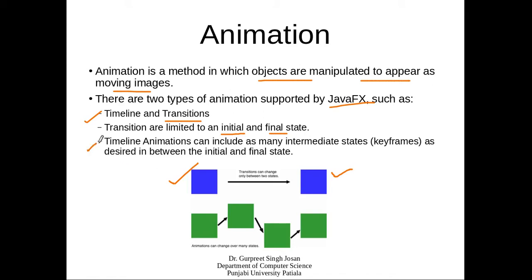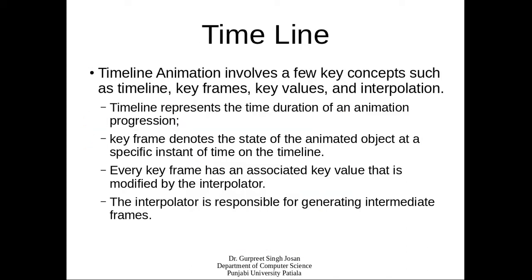Timeline animation includes as many intermediate states — also known as key frames — as desired between the initial and final states. We can add any number of key frames and change the state of objects at every key frame. The system generates a sequence of changes across the key frames to produce the animation. Timeline animation involves key concepts such as timeline, key frames, key values, and interpolation.